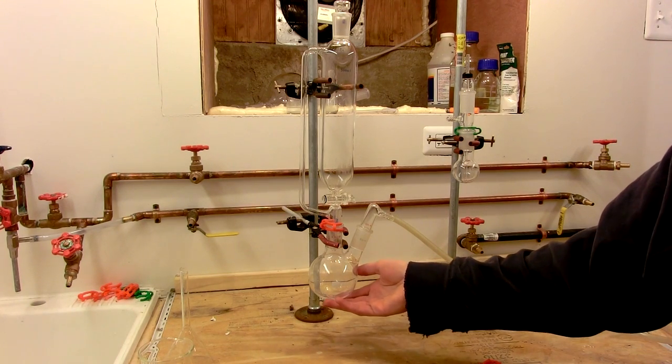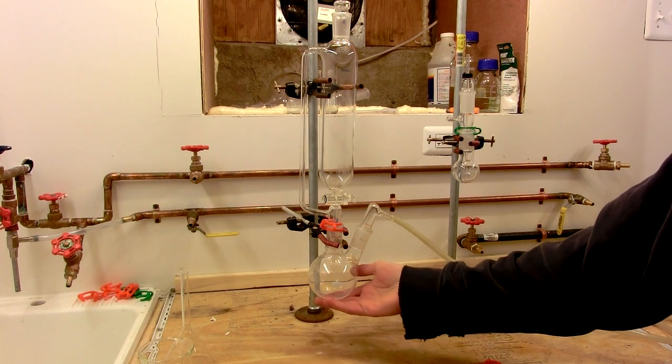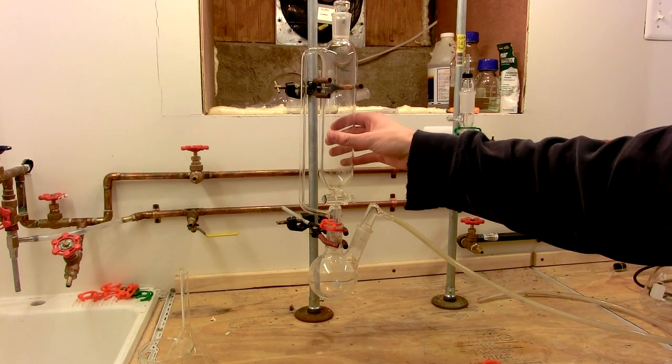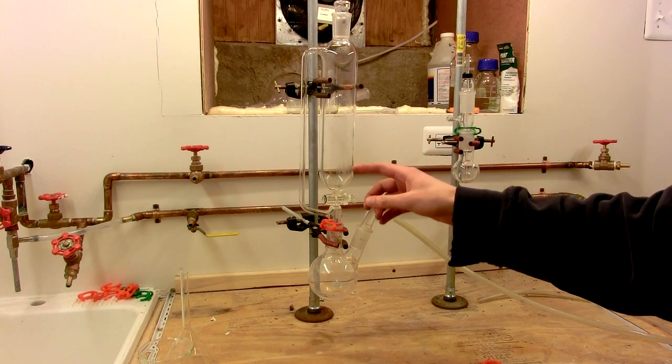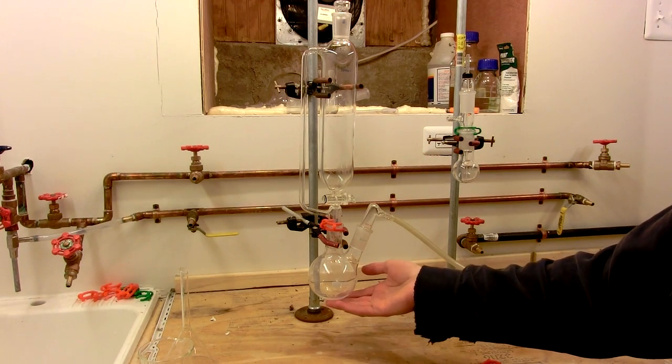The solid chlorine generant typically sits in the flask down here, and the hydrochloric acid sits up here in the addition funnel. By turning the stopcock, the hydrochloric acid is allowed to fall onto the generant, which generates chlorine gas.